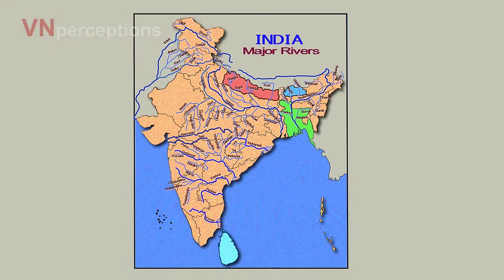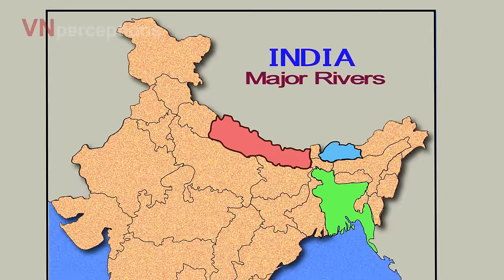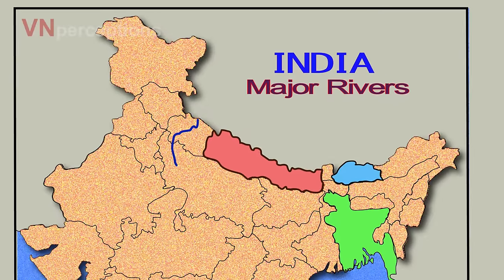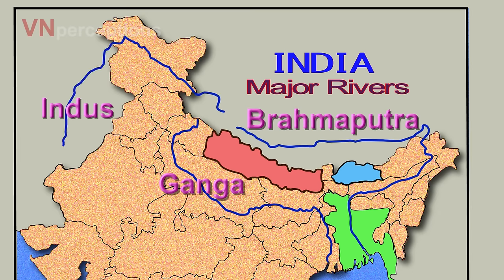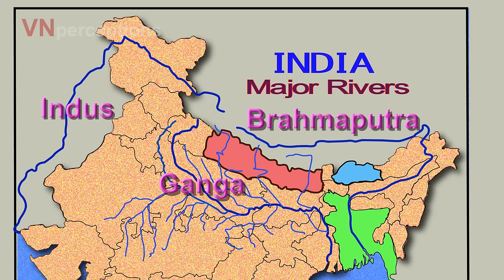The major Himalayan rivers are River Ganga, River Brahmaputra and River Indus. These are not just rivers — they are river systems.